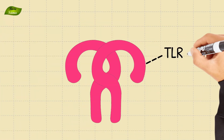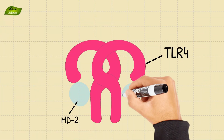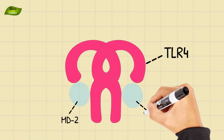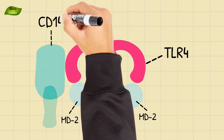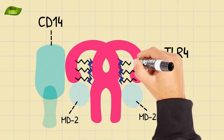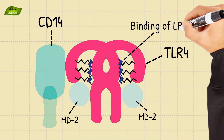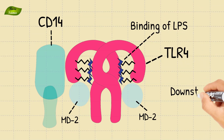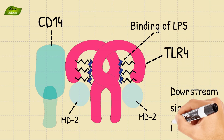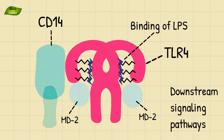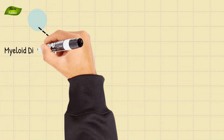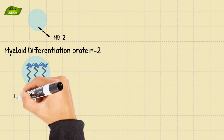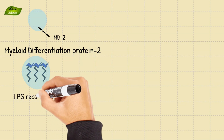TLR4 forms a complex with coreceptors MD2 and CD14, facilitating the binding of lipopolysaccharide. This interaction induces downstream signaling pathways. MD2, known as myeloid differentiation protein 2, aids in LPS recognition.